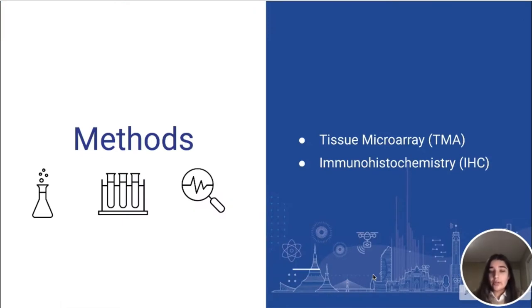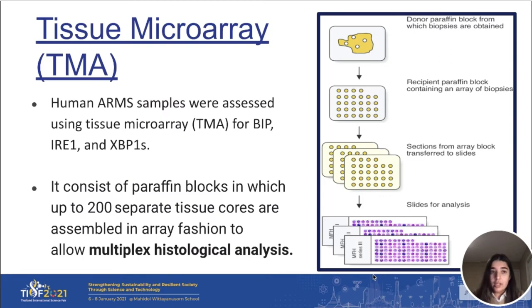In order to carry out this investigation, we used two main methods, namely tissue microarray (TMA) and immunohistochemistry (IHC). We assessed human samples with the help of tissue microarray for BIP, IRE-1, and XBP1S. Tissue microarray consists of paraffin blocks in which up to 200 separate tissue cores are assembled in an array fashion to allow multiple histological analysis.